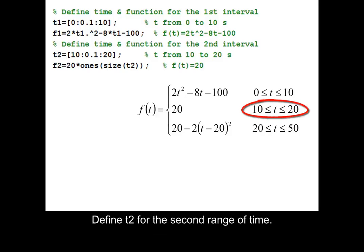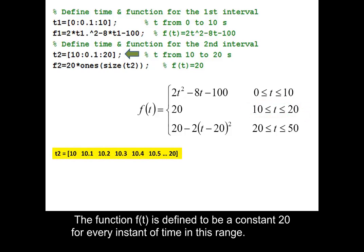Define T2 for the second range of time. The function f is defined to be a constant 20 for every instant of time in this range.